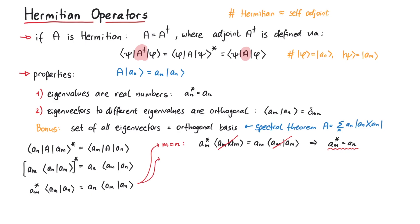Second, if m and n are not equal, we must investigate if the eigenvalues am and an are different, or if they are the same, in which case they would be degenerate eigenvalues.